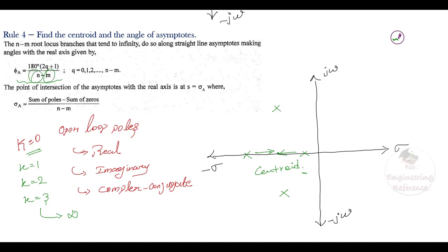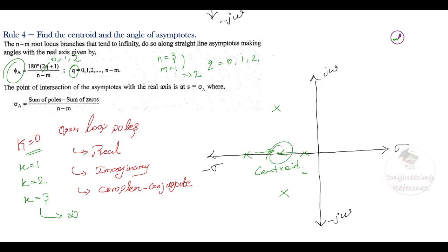The q value ranges from 0 up to n−m−1. For example, if n=3 and m=1, then n−m=2, and we calculate angles for q=0, 1, and 2, giving three asymptote angles. All angle of asymptotes are taken from the centroid point. The centroid formula is: σ = (summation of poles − summation of zeros) / (n − m).